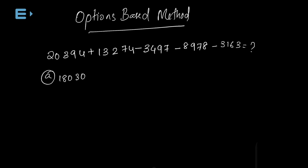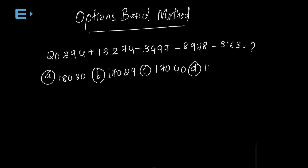Here is the question. The options are: first option — 17029, second option — 17040, third option — 17050, fourth option — 13060.